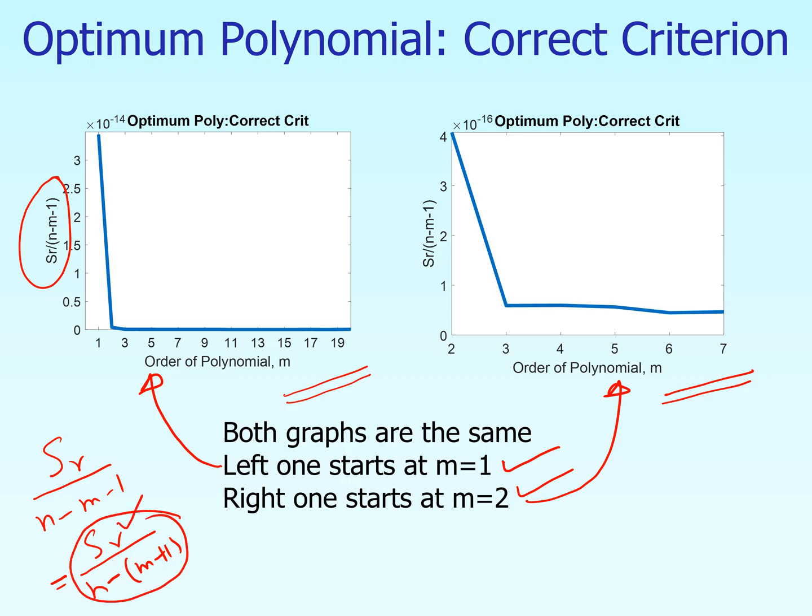We're taking the sum of the squares of the residuals and dividing it by the difference between the number of data points that you have and the number of constants we have in the polynomial model. Because if it is an m-th order polynomial, it has m plus 1 constants. A first order polynomial has two constants, the second order polynomial has three constants. What you're going to find out is that this numerator here, which is Sr, decreases as a function of m. It goes down as m increases. So does n minus m plus 1. This one also goes down as m increases. As you keep on increasing m, this particular quantity is going to decrease. The same is the case here, that the sum of the squares of the residuals is going to decrease as m increases.